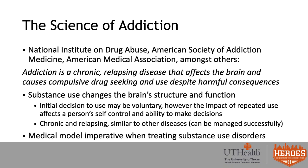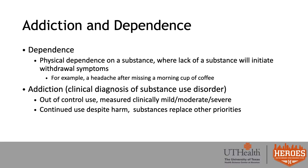It has been well established that addiction is a chronic relapsing disease that affects the brain and causes compulsive drug seeking and use despite harmful consequences. Substance use changes the brain's structure and function, and therefore even if the initial decision to use may have been voluntary, the impact of repeated use affects a person's self-control and ability to make future decisions. The science supports addiction as a chronic and relapsing disease similar to other diseases, but it can be managed successfully, and that's because the medical model is imperative to treating substance use disorders.